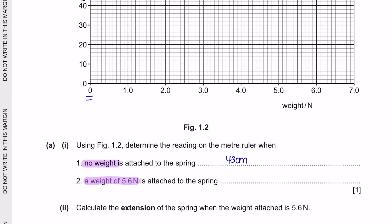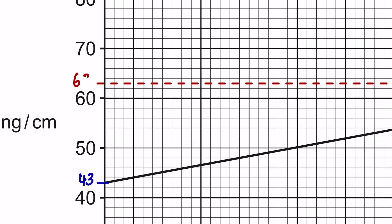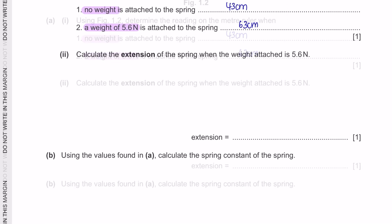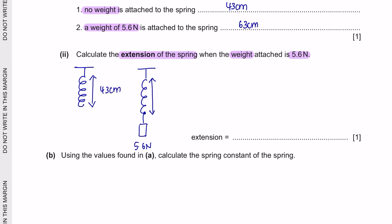Part 2: a weight of 5.6 N. At 5.6 N, the reading is at about 63 cm. Calculate the extension of the spring when the weight attached is 5.6 N. When there was no weight attached, the spring was at a length of 43 cm, and with the load attached, the spring stretched up to 63 cm. To calculate the extension, we just take the difference, which is 20 cm.